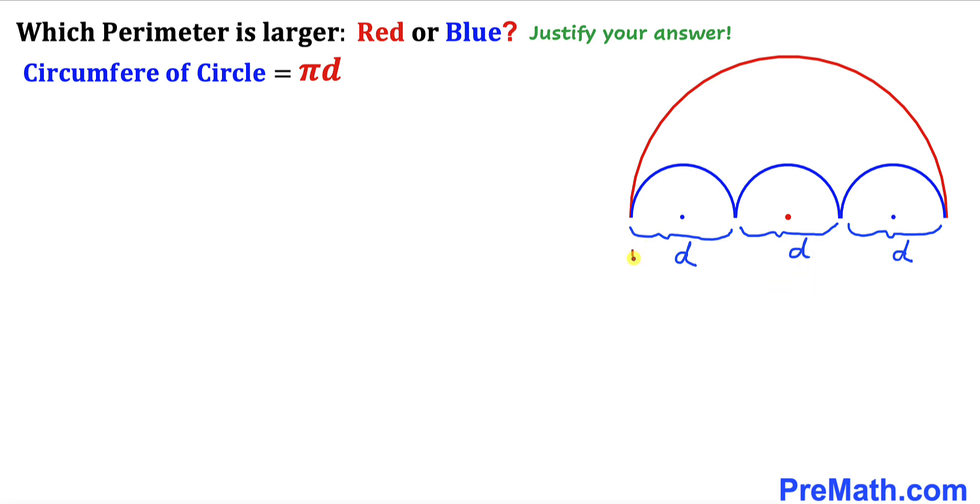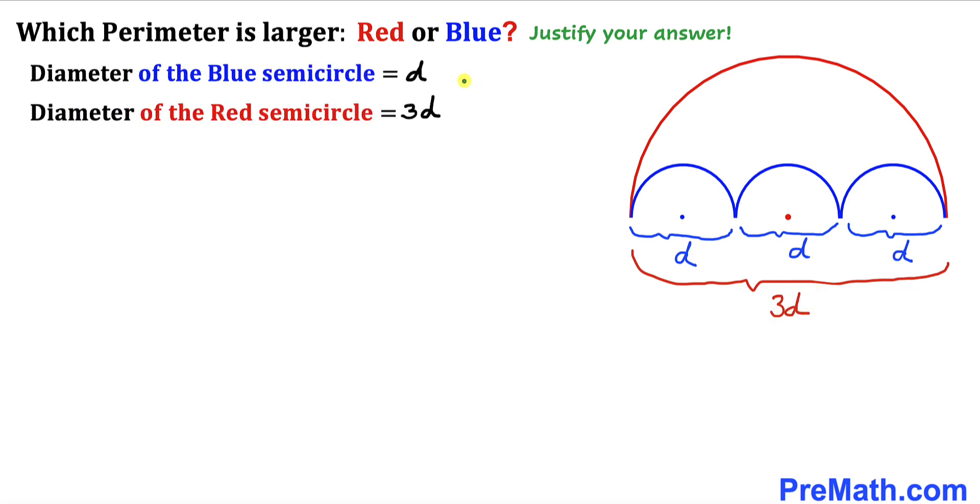Therefore, the diameter of this red semicircle is going to be 3d. So we have the diameter of each blue semicircle is d, and the diameter of this red semicircle is 3d.